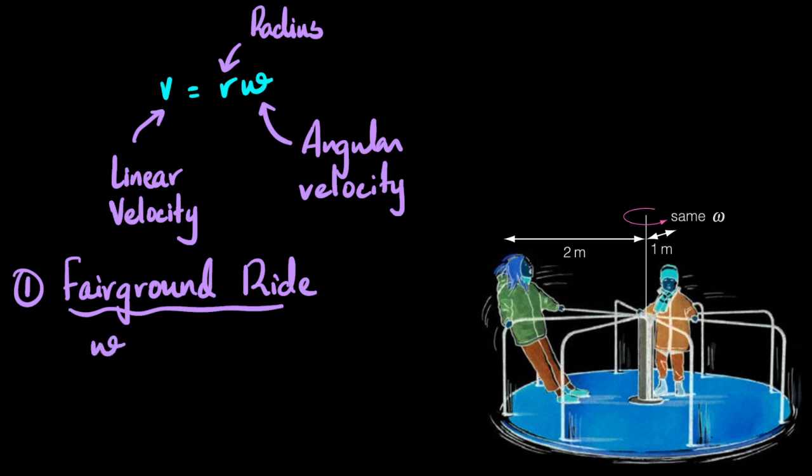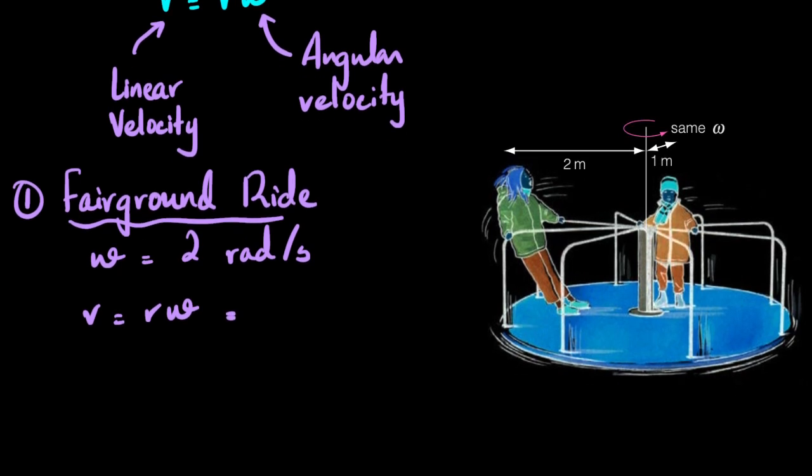The idea is simply this: Let's say that omega here is two radians per second. This is the angle which it covers every second. Now let's talk about v. For the child which is on the inside, what would be the linear velocity that the child has? So omega is two, so if we use this equation v equals r omega, for the child what would be the case?